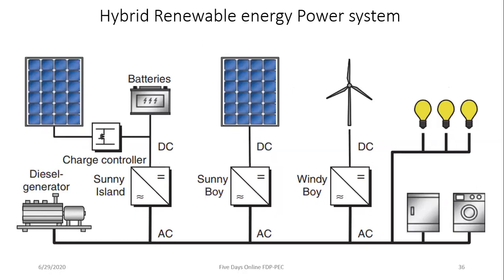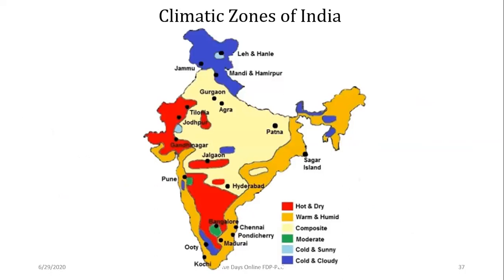We can use hybrid renewable energy systems combining batteries, solar PV, fuel cells, wind generation, and optionally diesel backup. Even with the same technology and power rating, a solar PV plant in Tamil Nadu will perform differently than one in Rajasthan due to different climatic conditions. We must carefully select which technology to install in each location.